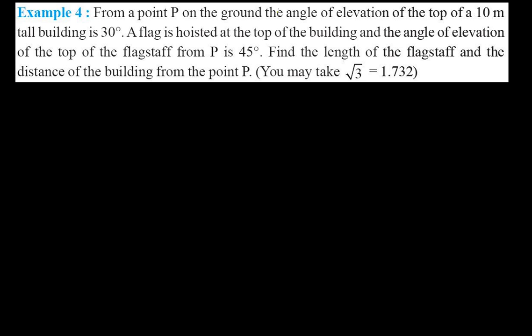Welcome friends. Here we have another trigonometric application word problem. The question says: from a point P on the ground, the angle of elevation of the top of a 10-meter tall building is 30 degrees. A flag is hoisted at the top of the building, and the angle of elevation of the top of the flagstaff from P is 45 degrees. Find the length of the flagstaff and the distance of the building from point P. Take the value of root 3 as 1.732.